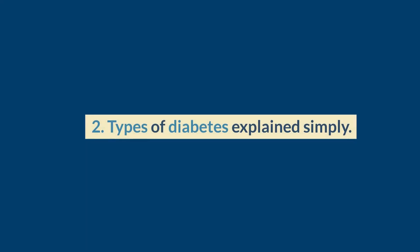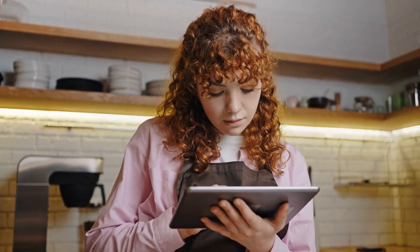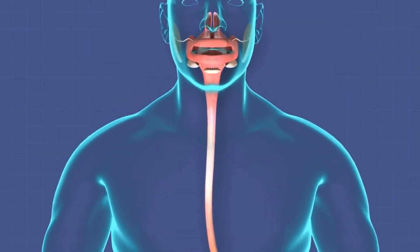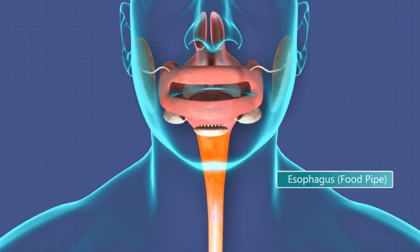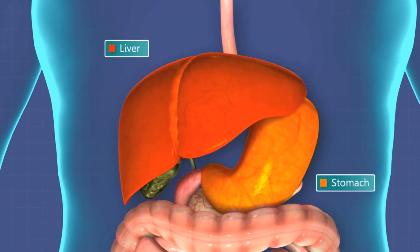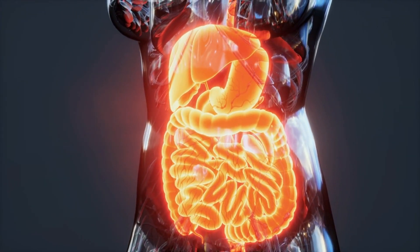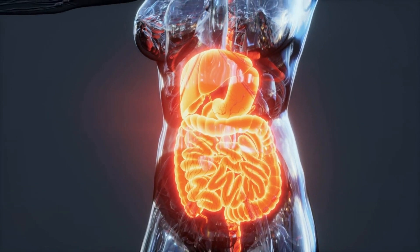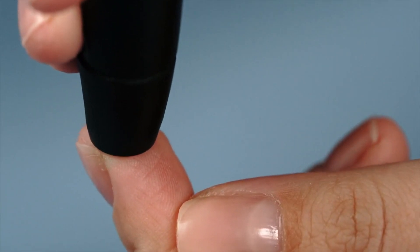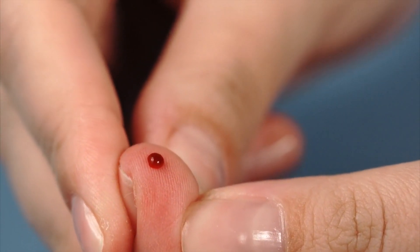Types of diabetes explained simply. First up, we have type 1 diabetes. It's an autoimmune disease where your body's immune system decides to go rogue and attack the cells in your pancreas that produce insulin. Insulin is like the superhero hormone that helps regulate your blood sugar levels. Without it, your blood sugar goes haywire, leaving you with the eternal task of manually managing your blood sugar levels through insulin injections or an insulin pump.